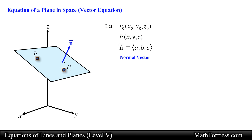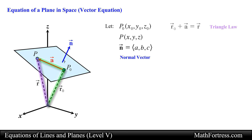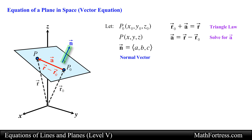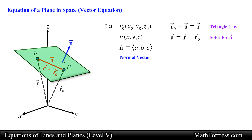Both point P0 and point P can be represented by position vectors, which we denote as vector r0 and vector r respectively. Let's label the vector with initial point P0 and terminal point P as vector a. Notice that vector r0 plus vector a equals vector r after applying the triangle law for vector addition. Solving for vector a, we obtain vector r minus vector r0. Notice that vector a lies completely on the plane, and the normal vector is orthogonal to the plane, hence orthogonal to any vector on the plane — in particular, orthogonal to vector a.